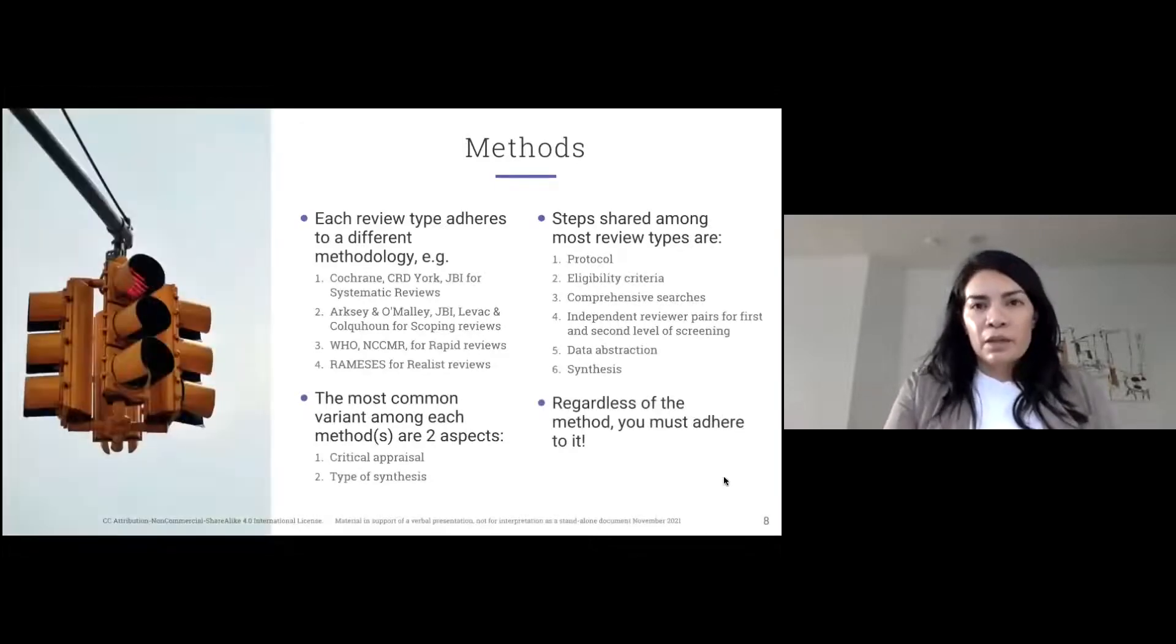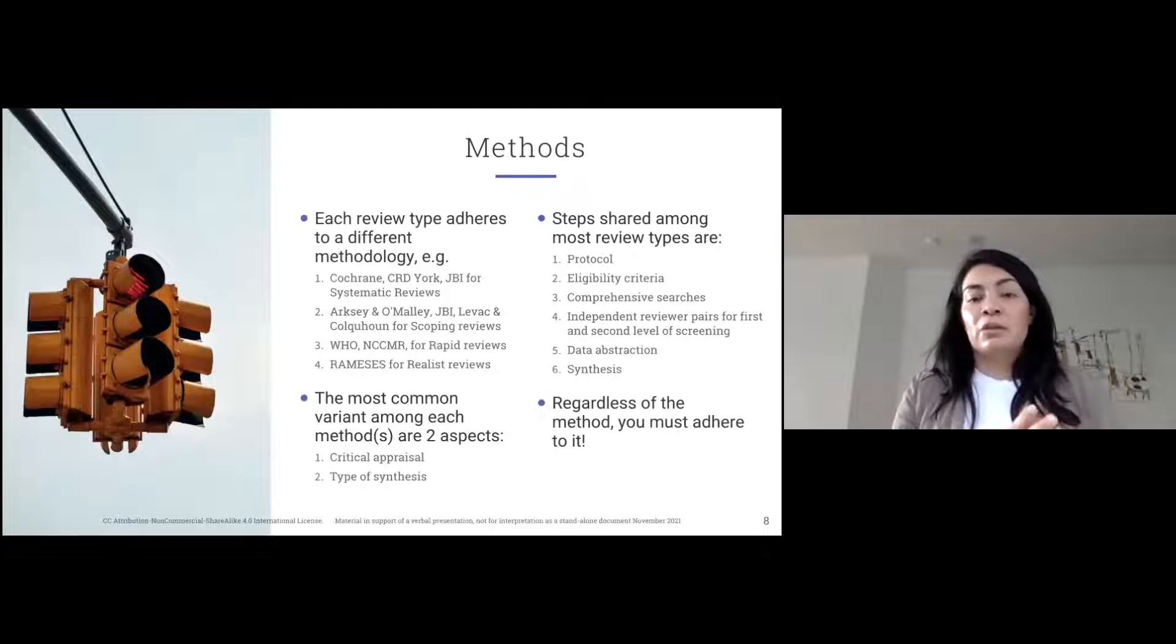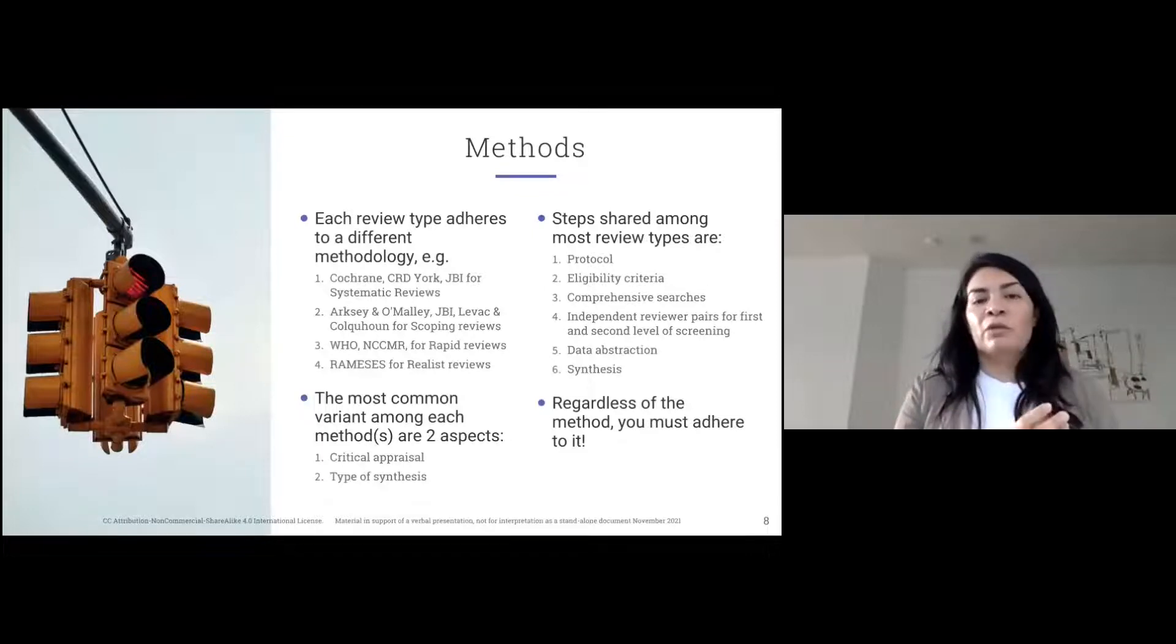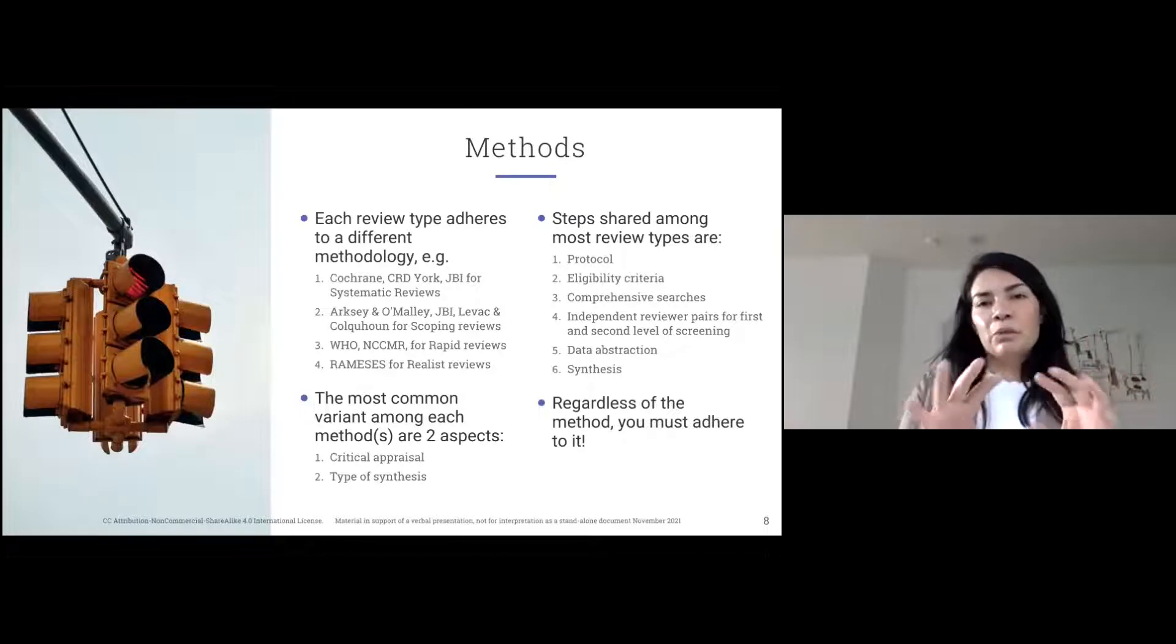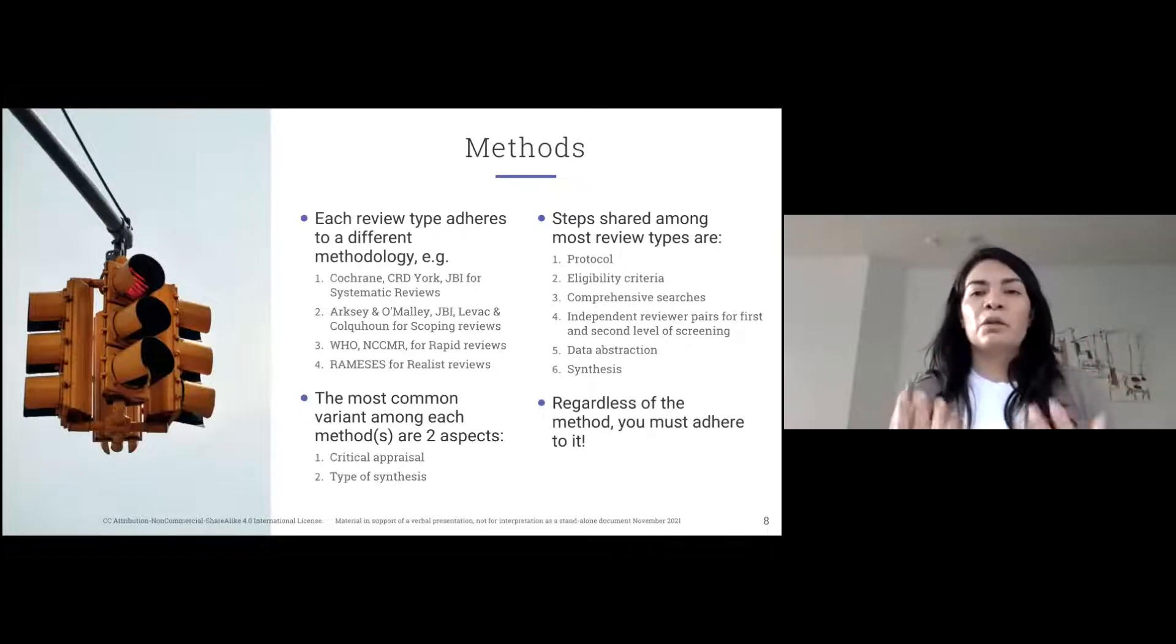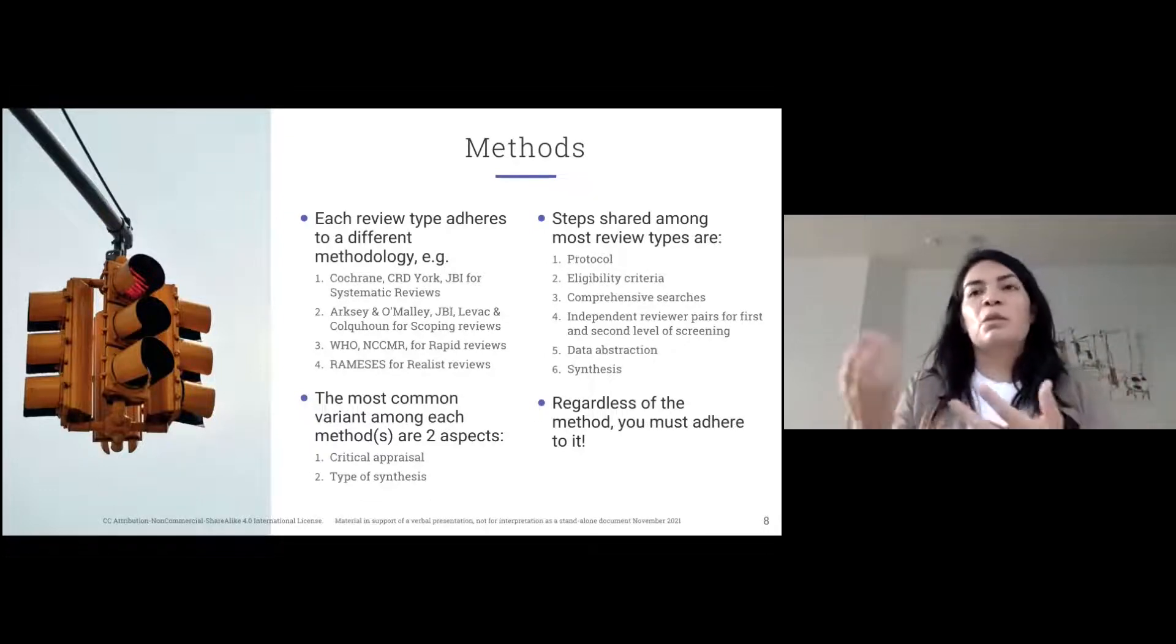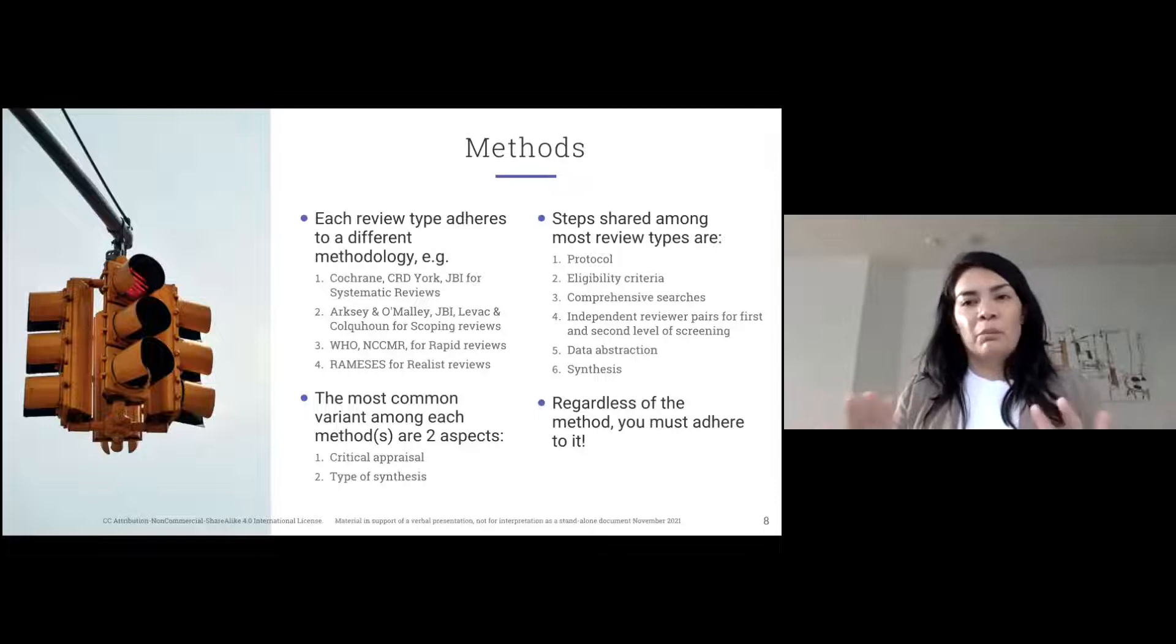The question you always have to keep in mind is, what is the best method, what is the best study type that I need in order to answer my question to the best possible way. Because at the end of the day, what we're all trying to do here in the research ecosphere and scholarship is to contribute to scholarship in a meaningful way. So every review type has a different method. If you're completing systematic reviews, you should follow the Cochrane Handbook, CRD York, or JBI.